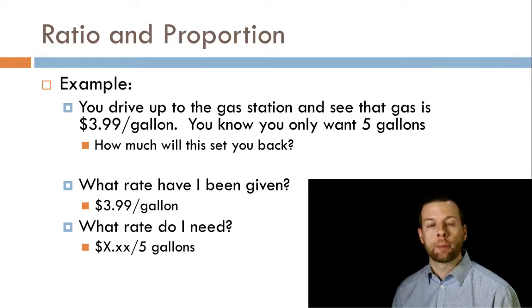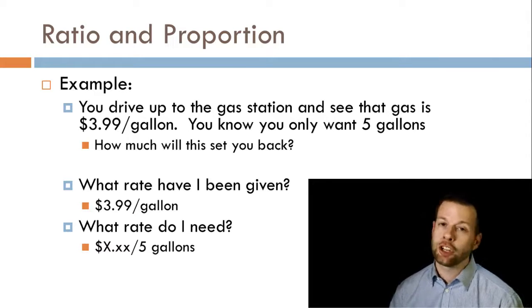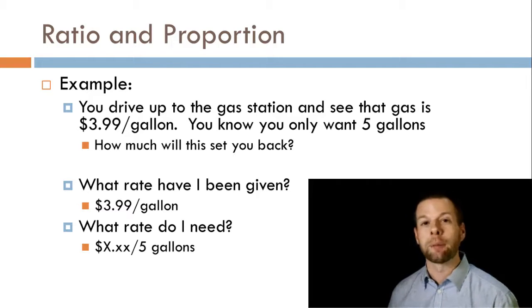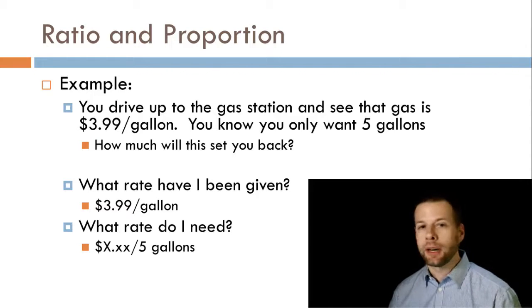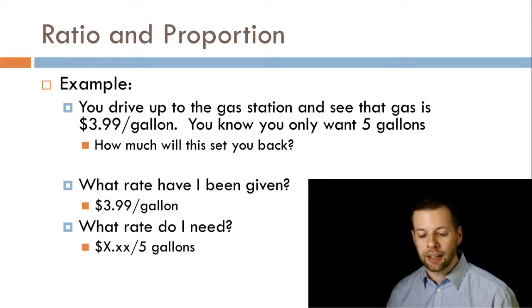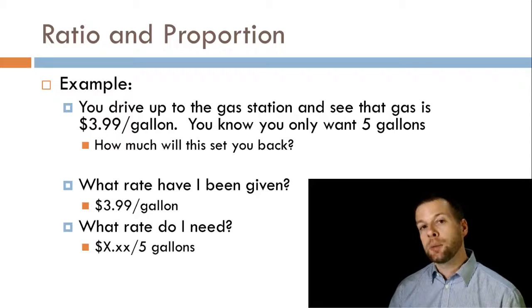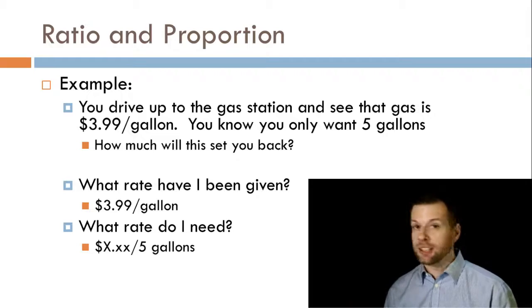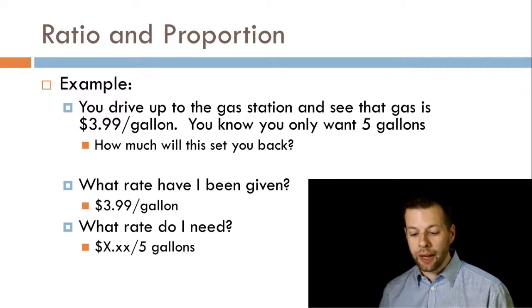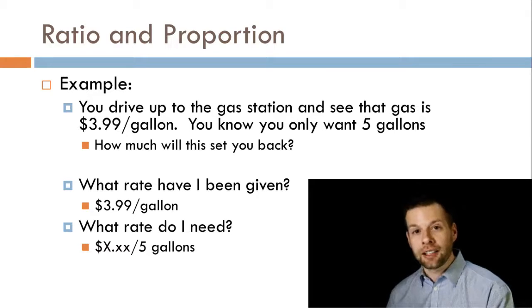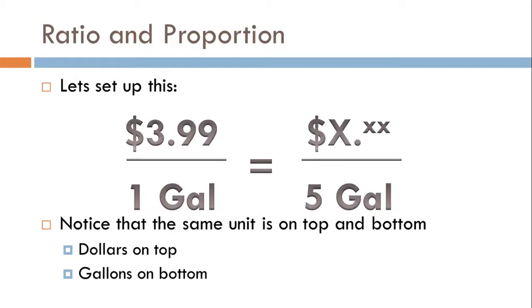Let's check out an example of ratio and proportion. Imagine you're driving and gas is $3.99 a gallon. You only want five gallons — how much will that cost? The rate you're given is $3.99 per gallon. The rate you need is how much money per five gallons.